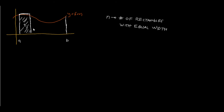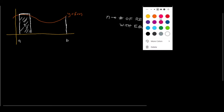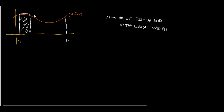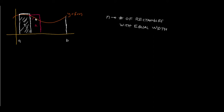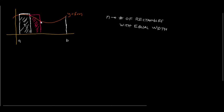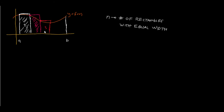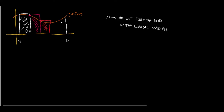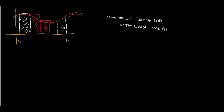And then drawing the next rectangle — rectangle 2. I start at the point where the previous rectangle meets the function. Then the next rectangle, rectangle 3, and so on, assuming equal width throughout. We continue until we reach the last, the nth rectangle.